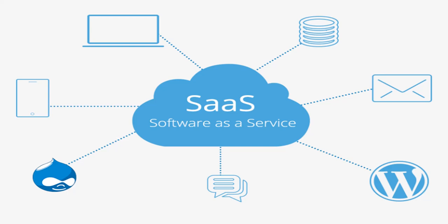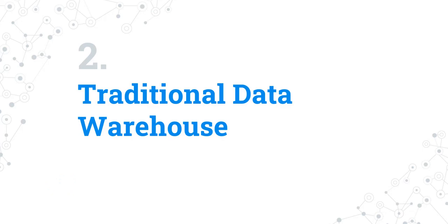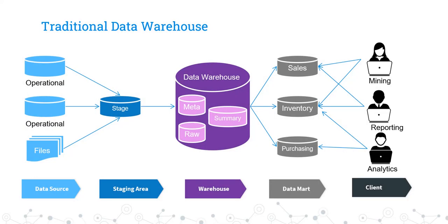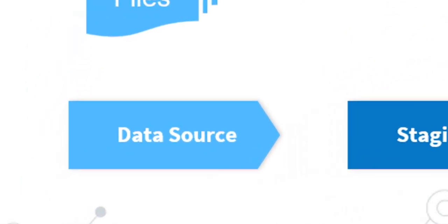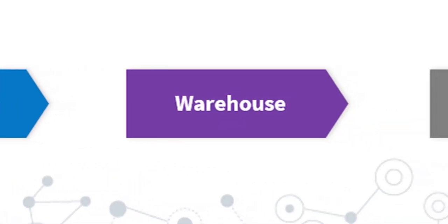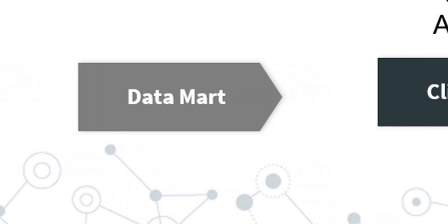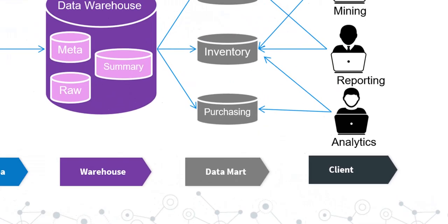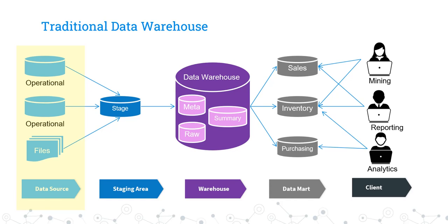Before seeing the drawbacks of the traditional data warehouse, let's look at its design. As we can see on screen, the traditional data warehouse has multiple layers: the data source layer, staging layer, warehouse layer, data mart layer, and the client layer. The data source layer brings data from various source systems such as Salesforce, CRM, human resources, and so on. Such data is stored in traditional databases or using flat file systems.